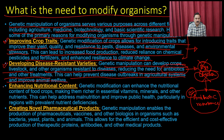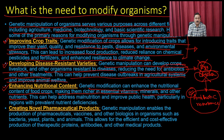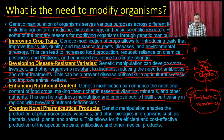Similarly, you can have enhancement in nutritional content. Genetic modification can enhance the nutritional content of food crops, making them richer in essential vitamins, minerals, and other nutrients. This can help address malnutrition and improve public health, particularly in regions with prevalent nutritional deficiencies.